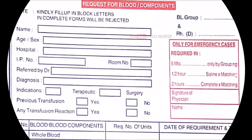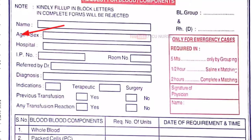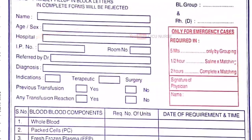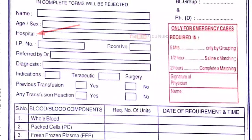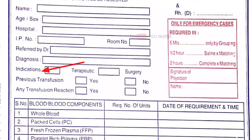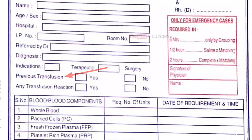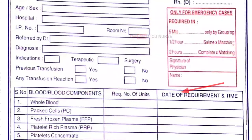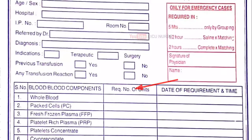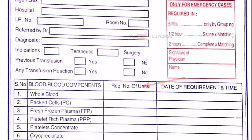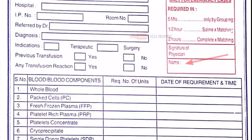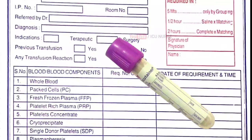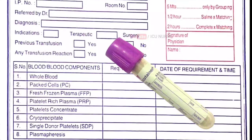Fill in all the full details of the patient in the requisition form like full name, IP number, age, sex, blood grouping and typing, viral screening, hospital name, department name, bed number, indications for transfusion, previous transfusion details, previous transfusion reactions if happened, blood type, required date and time, number of blood units required, hemogram values, doctor's name who advised the transfusion, and also an EDTA sample for blood grouping and cross matching so that you can obtain the blood from the blood bank for transfusion.